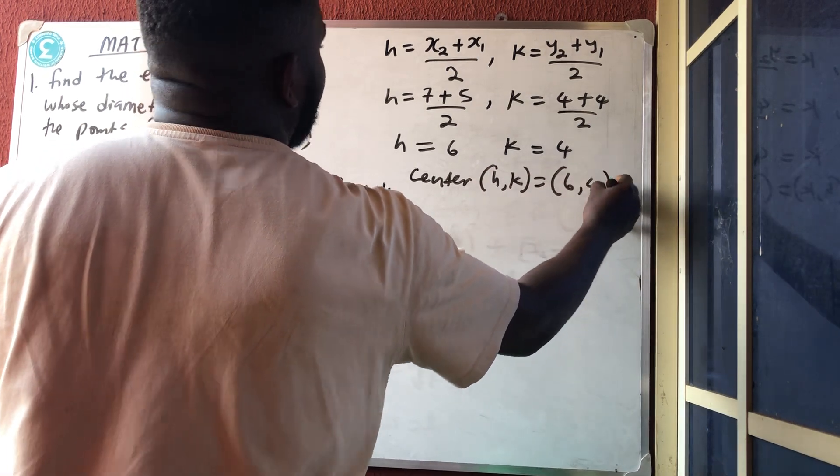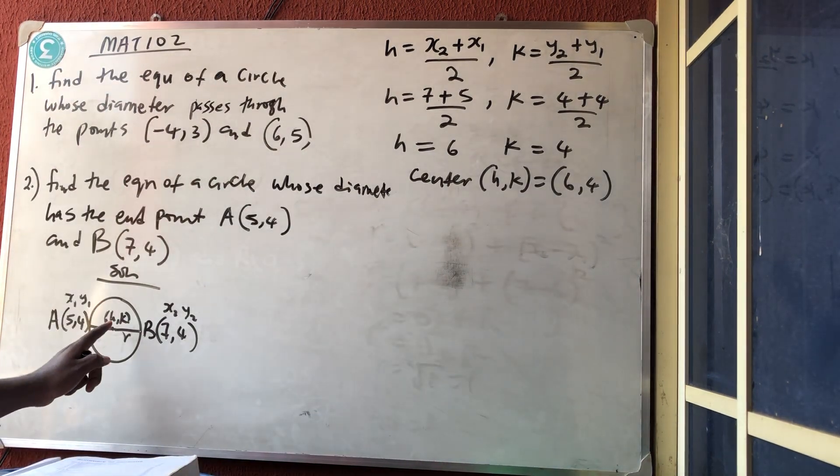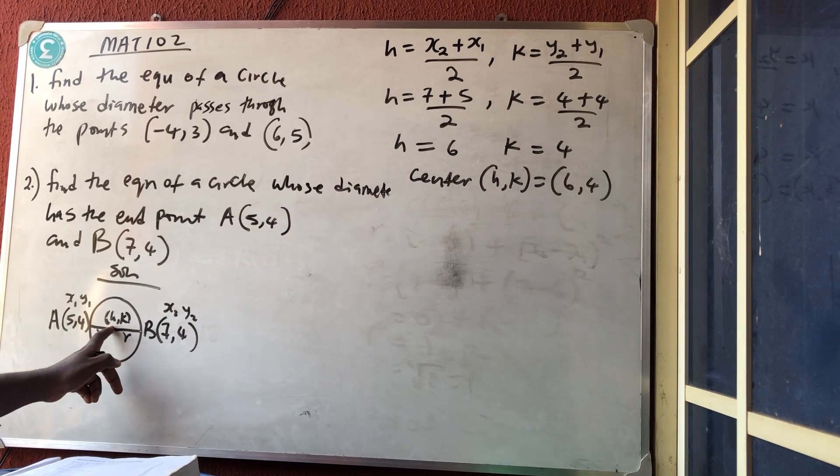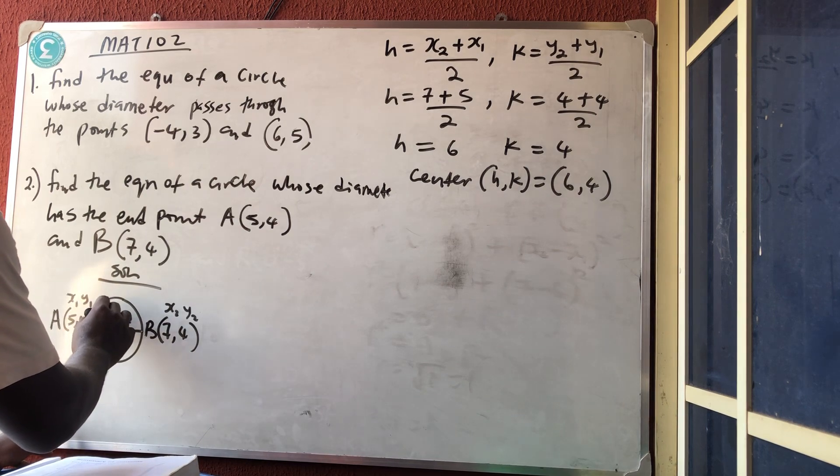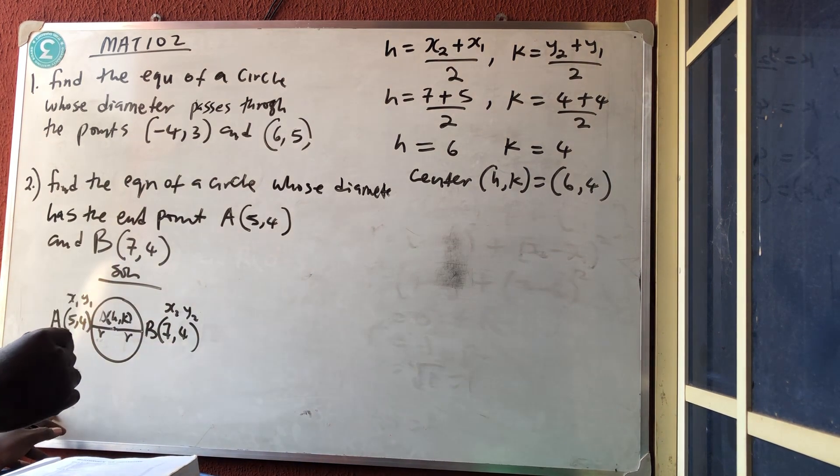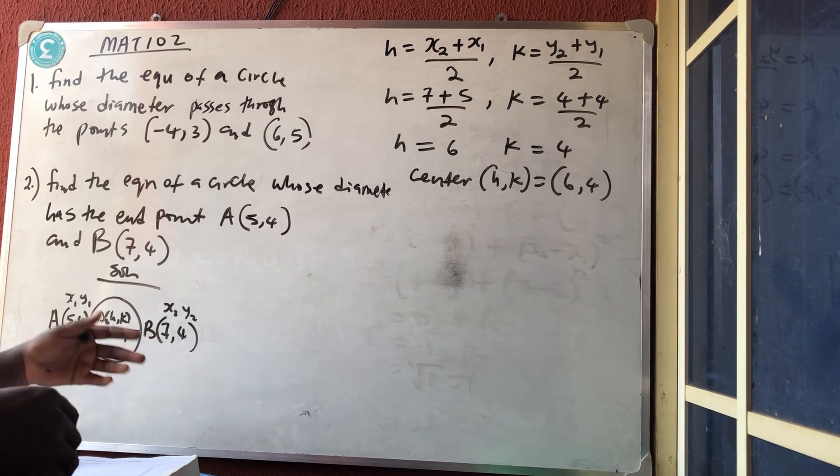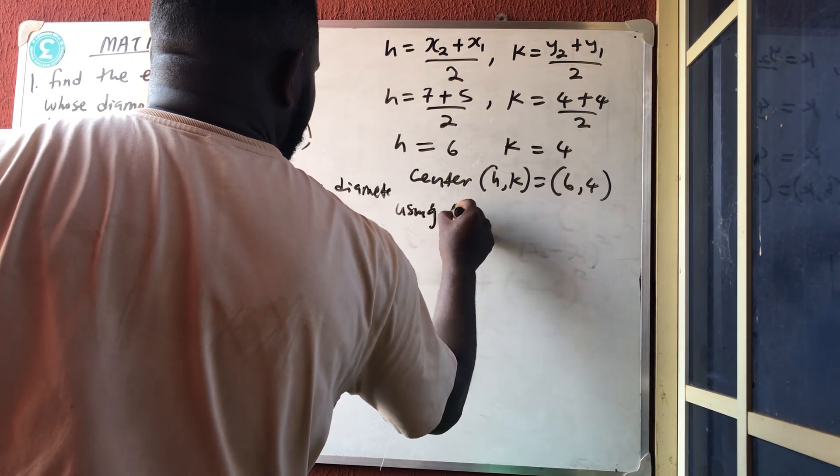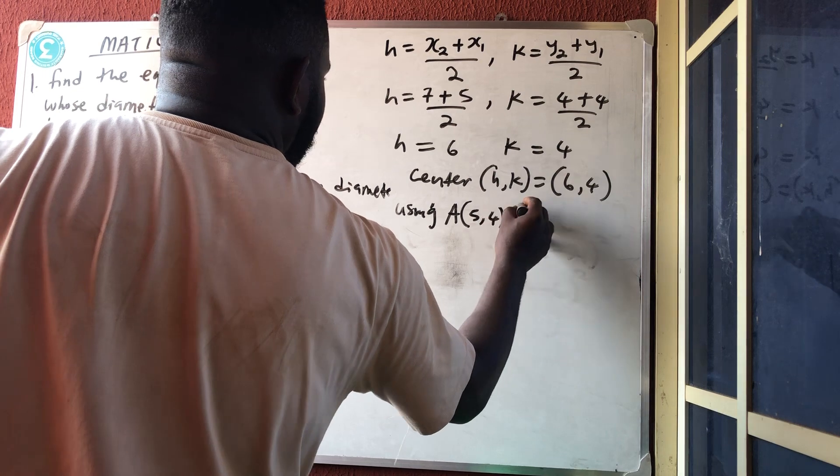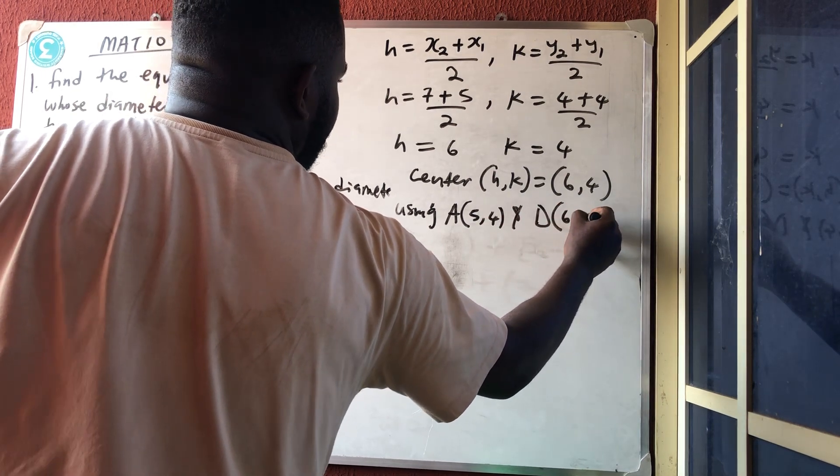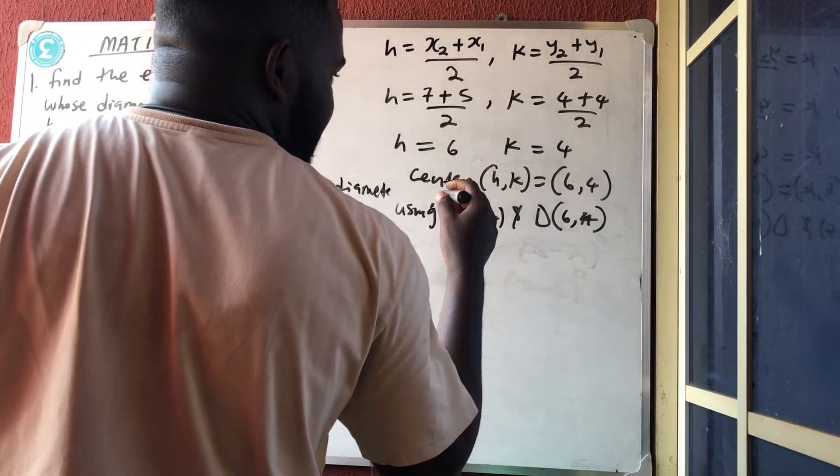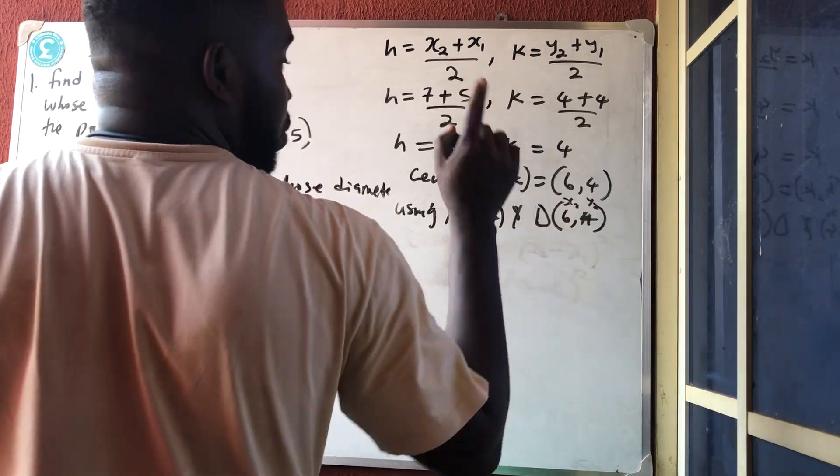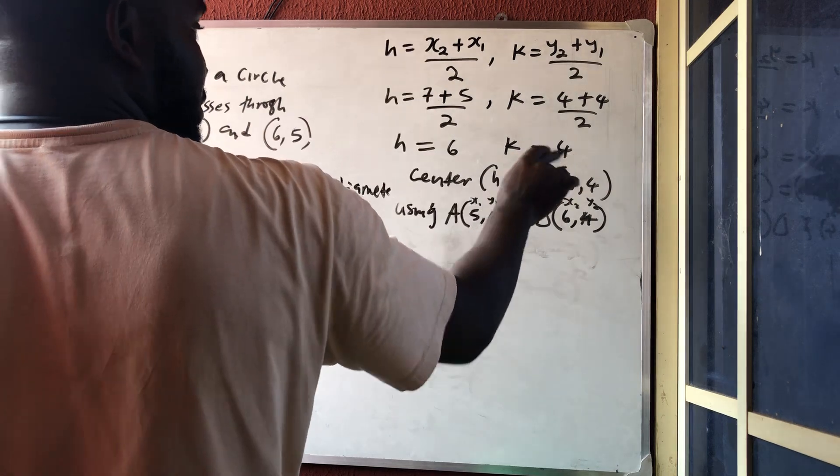To get the radius, we're getting the distance between this point, the center, and any part of the circumference. I can decide to use point A and the center, let me call the center point D. So I can use A and D or D and B - either way you'll still get the same answer. Using A which is 5 comma 4 and D which is h comma k which is 6 comma 4. Please always use x and y - call this one x₁,y₁ and x₂,y₂. Don't forget about the previous one you used to get your center.